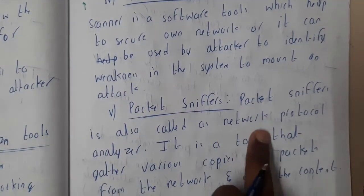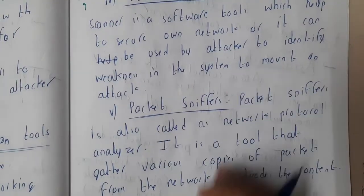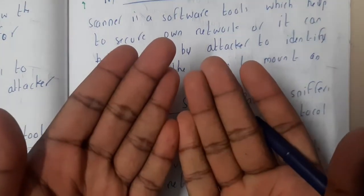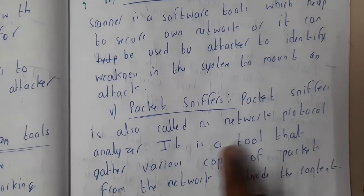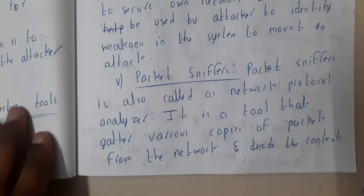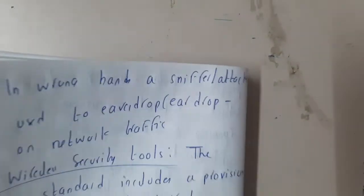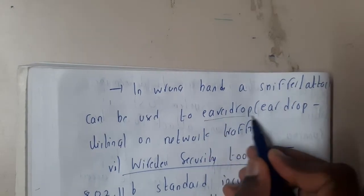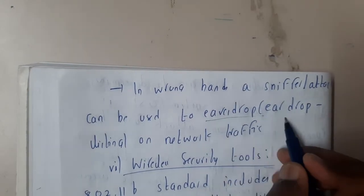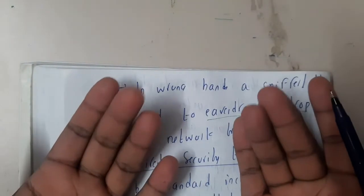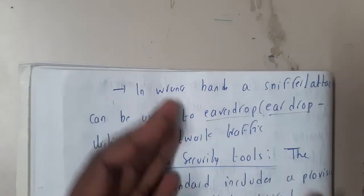The fifth tool is the packet sniffer, also called a network analyzer. Sniffing is like how a dog sniffs for a smell — here, we copy packets from the network and check the data inside them. It is a tool that gathers copies of packets from the network and decodes their content. If the data is properly encrypted, decoding won't be possible. In the wrong hands, a packet sniffer attacker can be called an eavesdropper — listening in on conversations between two users.